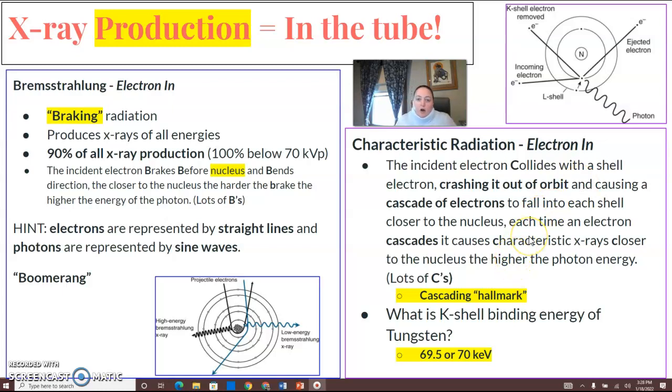It has a cascading hallmark. They move places in their shells. The binding energy of tungsten is 69.5 or 70 keV, so you'll know that if you see 69.5 or 70 keV, that your answer is going to be characteristic radiation.